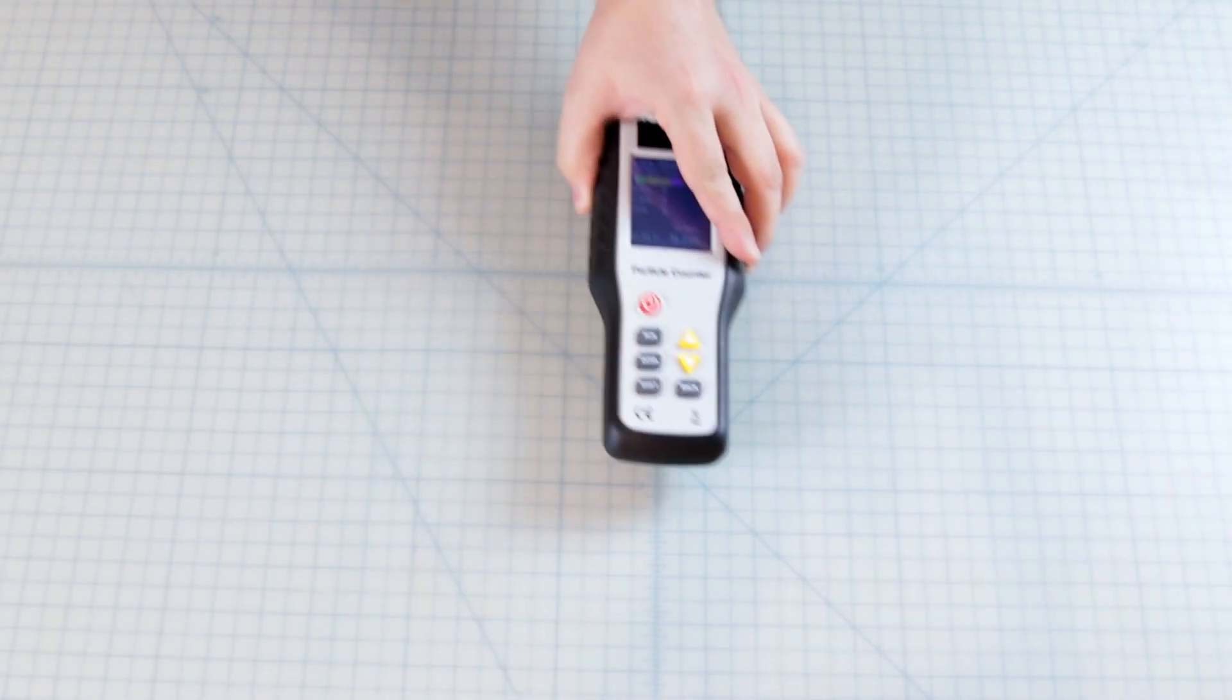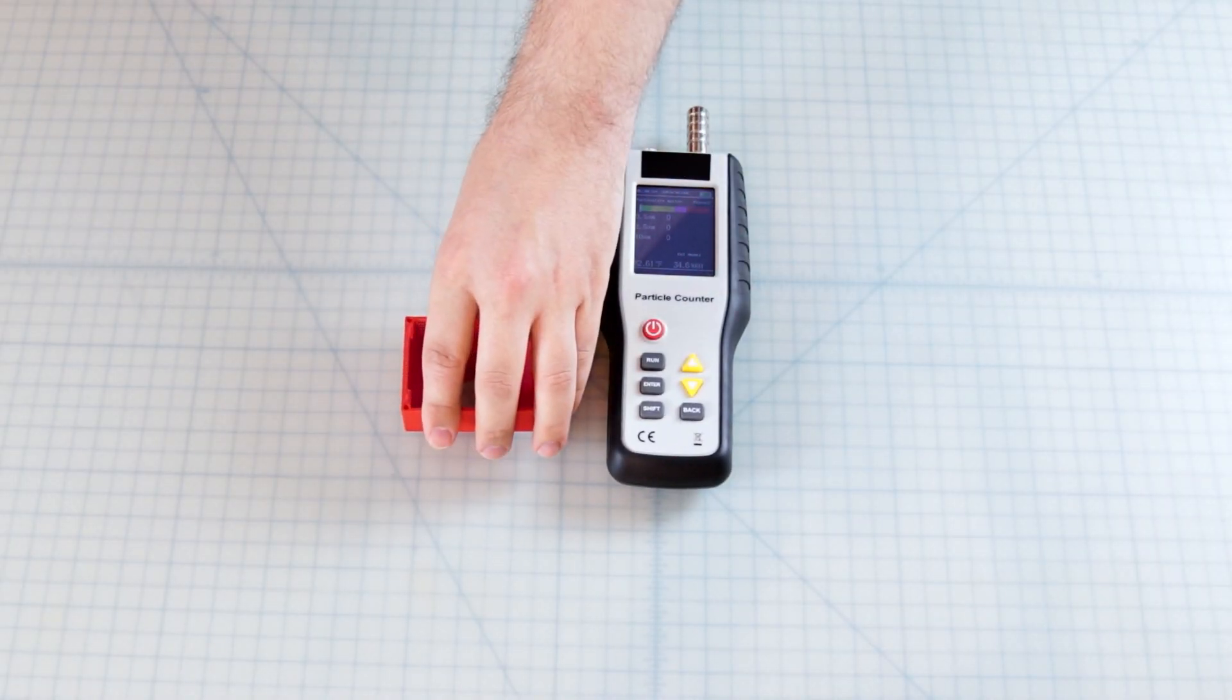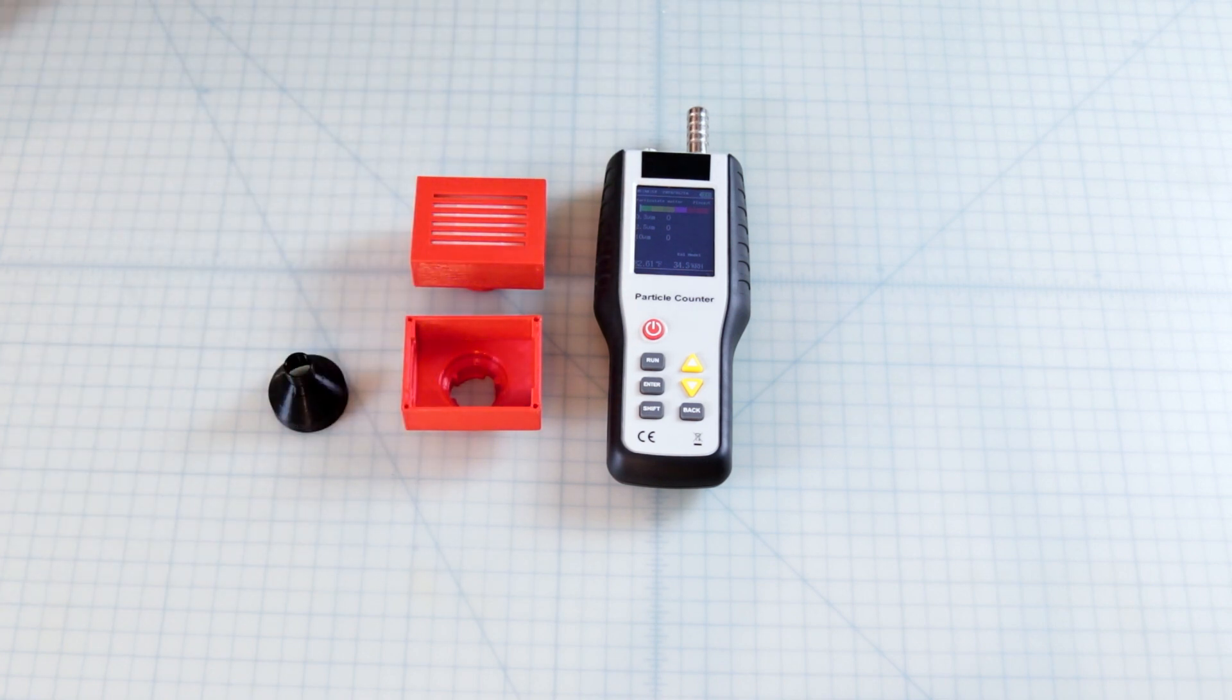Second, we'll attempt a more quantitative test with particle size analysis. For this test, I'll use a particle counter capable of detecting 0.3 micron particles, an empty filter cassette, a completed filter cassette, and two 3D printed testing parts.